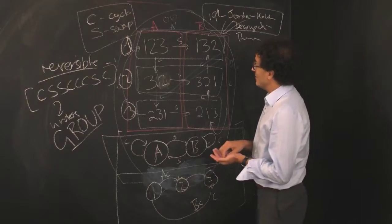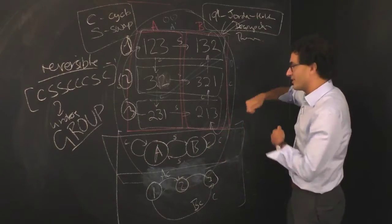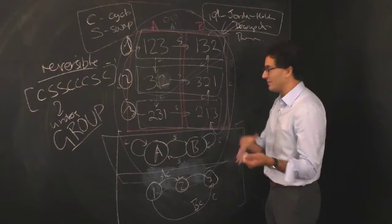So that's the 19th century. In fact, people love the Jordan-Holder decomposition. Look, if you're a group theorist, you say, oh look, there are these simple groups, there are normal subgroups, it's a semi-direct product.